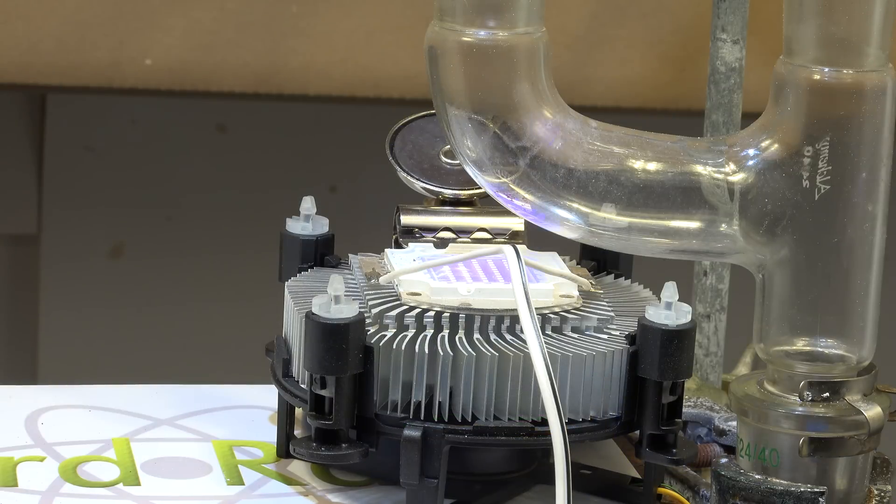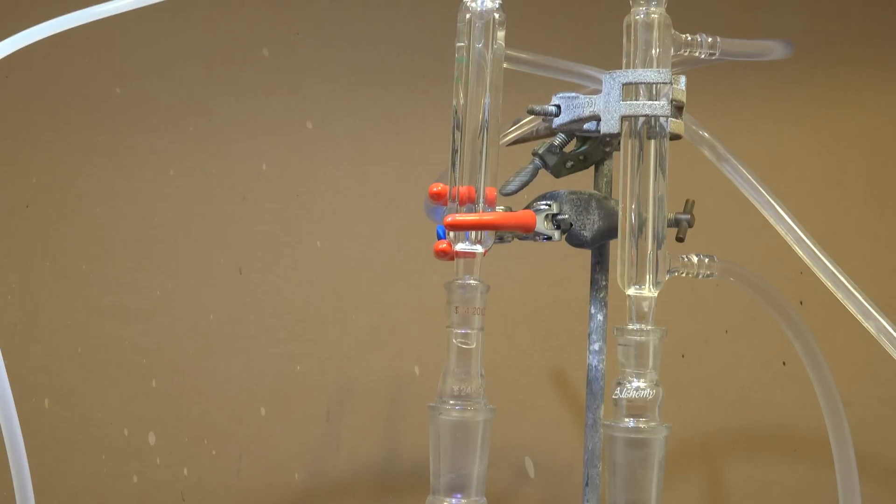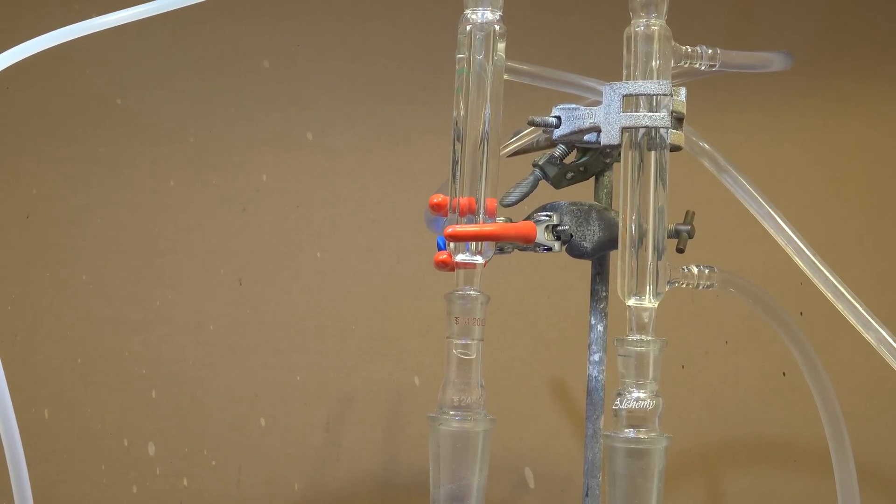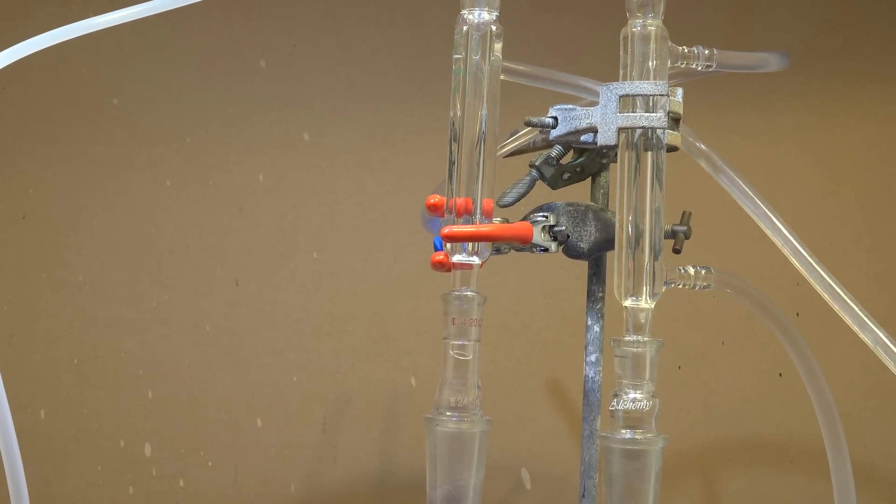The UV light initiates the reaction between the gases and the heavier products will condense in this exit column and drip back down into the boiling flask. The lighter byproducts will not condense and exit out the top.